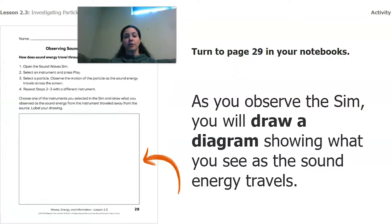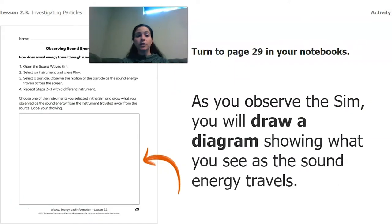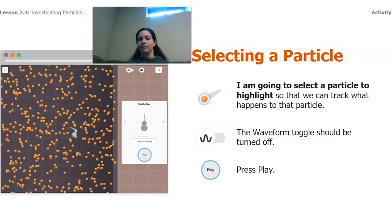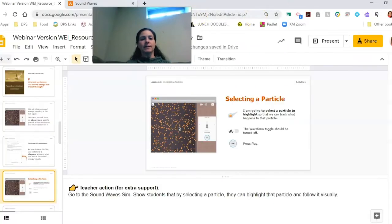Now, if you have your student notebook, great, you can turn to page 29. If you don't have your notebook, that's fine too. Just grab a piece of paper and a pencil or a pen, and we're going to draw a diagram of what we're seeing when the sound is traveling. So I'm going to go into the sim.